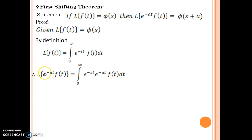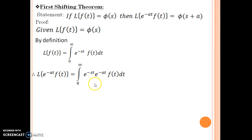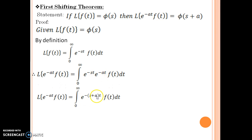In order to find this Laplace, we again use the definition. Laplace of e to the power minus at times f(t) is nothing but the integral from 0 to infinity of e to the power minus st times e to the power minus at times f(t) dt. That is straightforward with the help of the definition. Since the bases are the same, you can always add the indices and simplify further — you obtain this.